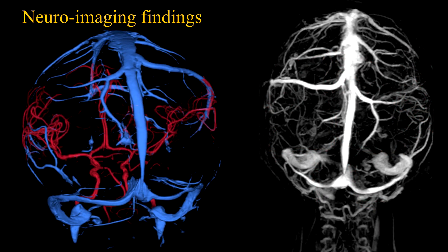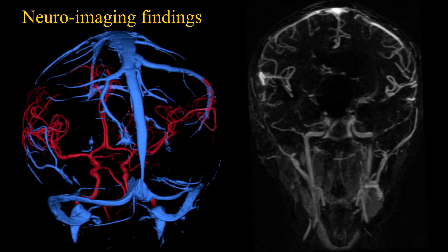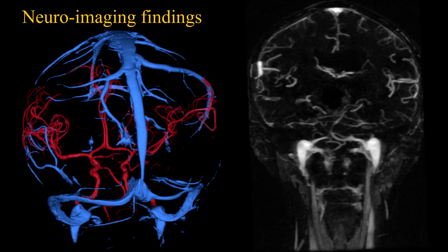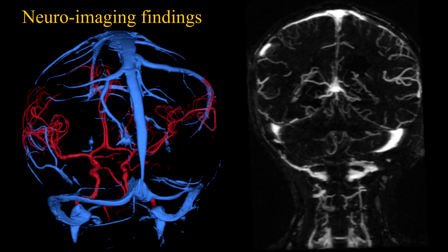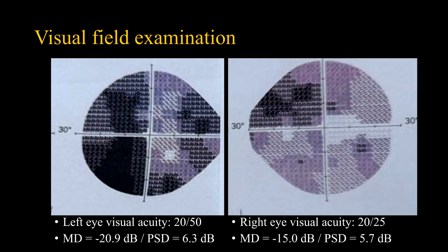The venous anatomy should be evaluated preoperatively. There is no major sigmoid sinus dominance. The temporal venous drainage pattern shows a more prominent complex of the vein of Labbé on the left, while on the right side there is more important drainage towards the Torcular.